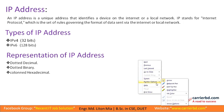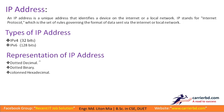We can represent an IP address in 3 ways: dotted decimal, dotted binary, and hexadecimal. For example, an IPv4 address like 192.168.0.1 has 8 digits per octet.